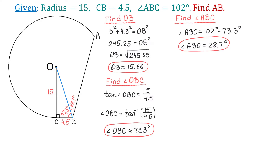In the next step, we connect points A and O to form another triangle. In this triangle, side AO is 15 units because it is the radius of the circle, side BO is 15.66 units, and angle ABO is 28.7 degrees. This triangle is not a right triangle, so to find side AB, we will use the law of sines.